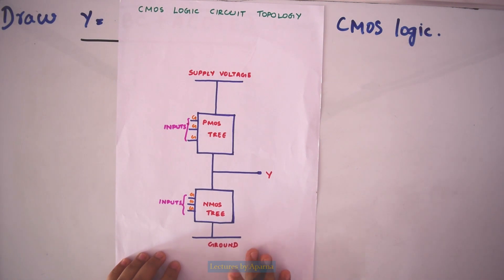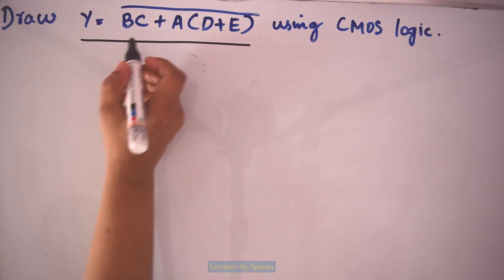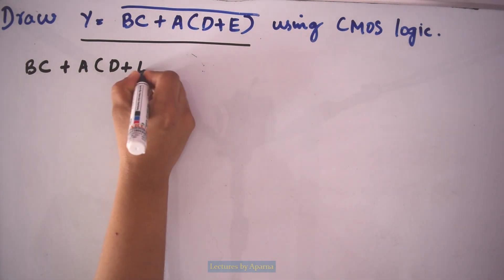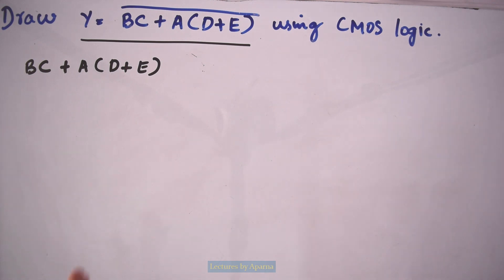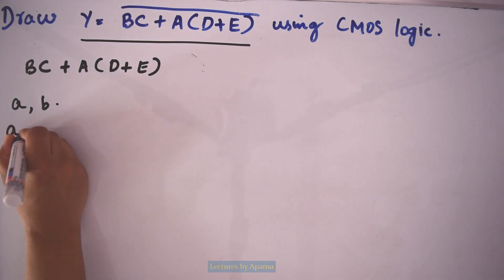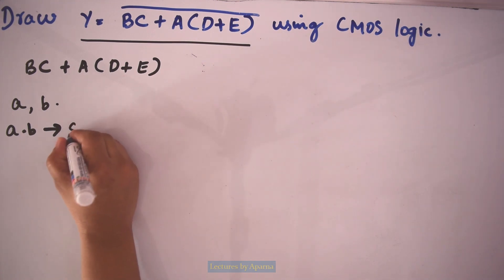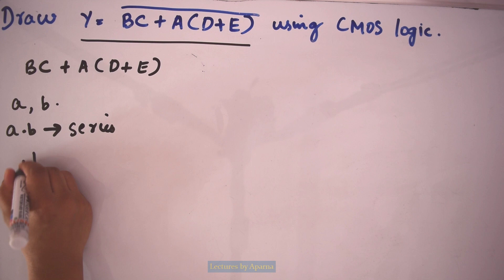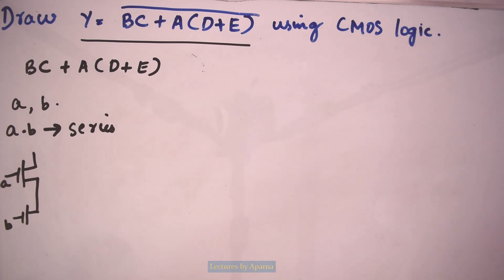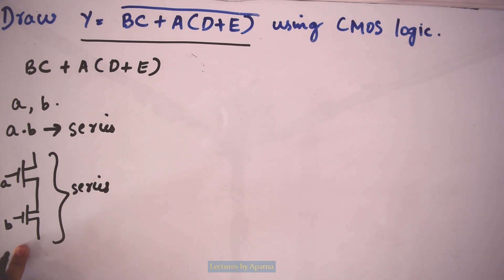First we are drawing the NMOS tree. Considering the logic function, specifically the portion inside the complement — that is BC plus A into (D plus E). According to the rule for drawing the NMOS tree: to implement a function A dot B, the two NMOS transistors should be connected in series, with input A to one and input B to the other. These transistors in series implement the function A dot B.